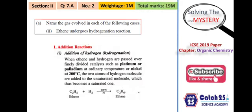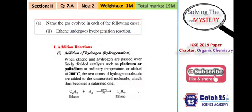That's it for the 2019 paper. This was a quick revision of the 2019 ICSE chemistry class 10 paper covering the organic chemistry chapter. I hope you liked the video. I'll be handling other papers similarly — the 2020 paper is already uploaded. I've commented on each question that is not in the current syllabus. Do subscribe to Catch 25 Science Academy and keep watching our videos. Bye!